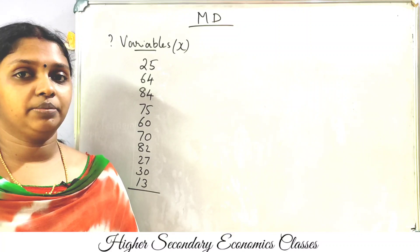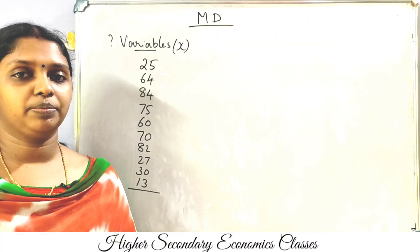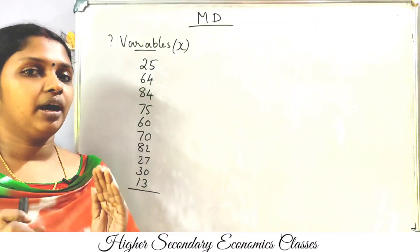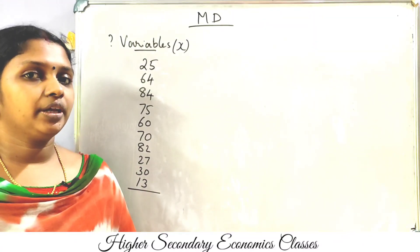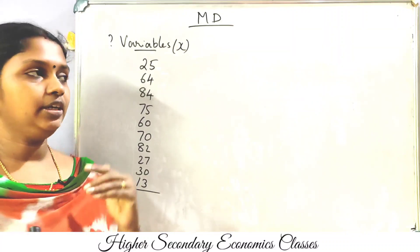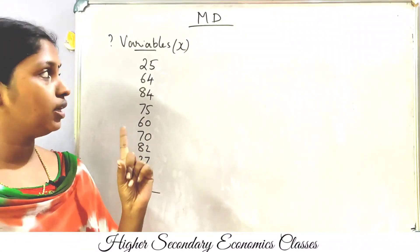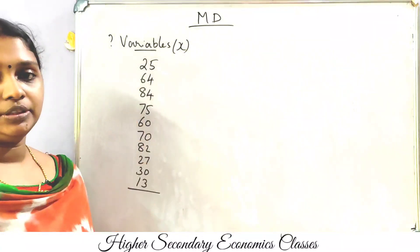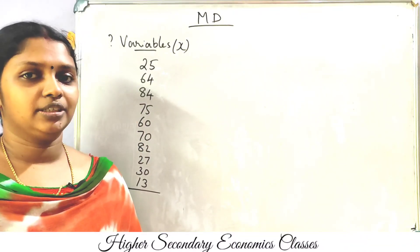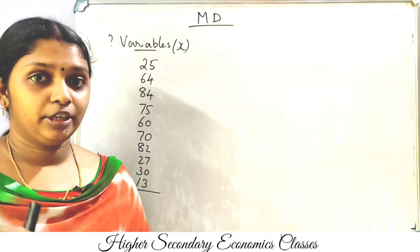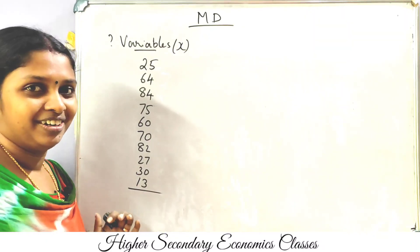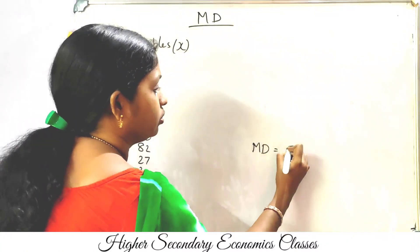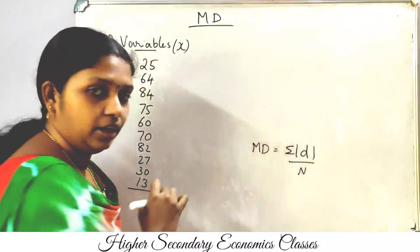In the previous video, we talked about mean deviation and details about mean deviation. We will talk about the first method of arithmetic mean. For example, we will talk about the problem in individual series: calculate mean deviation. We will talk about x variables. How do we calculate mean deviation in individual series?